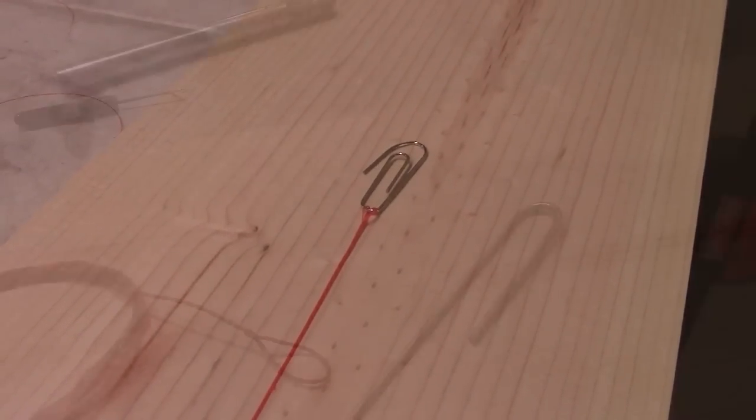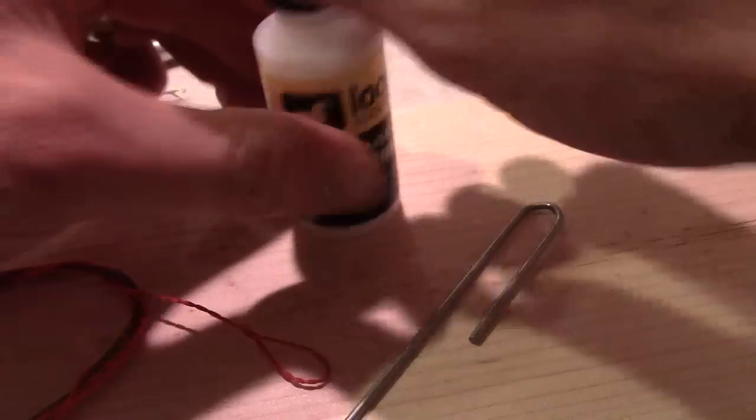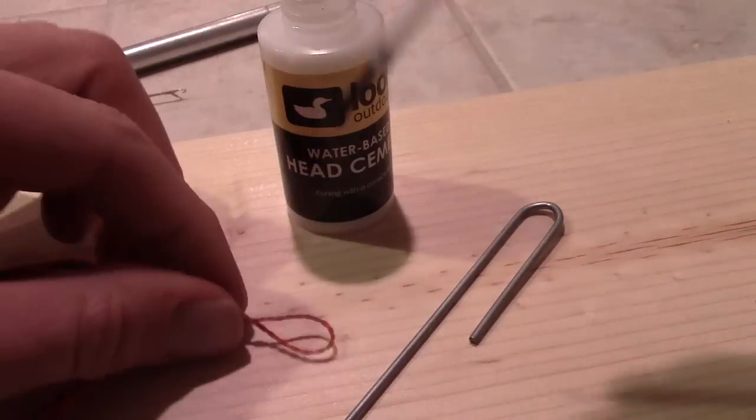Just as you would with a mono leader, you can tie a perfection loop in each end and thread on your normal tippet material. I like to coat the ends with a little bit of loon water-based head cement to make them a little bit more durable.